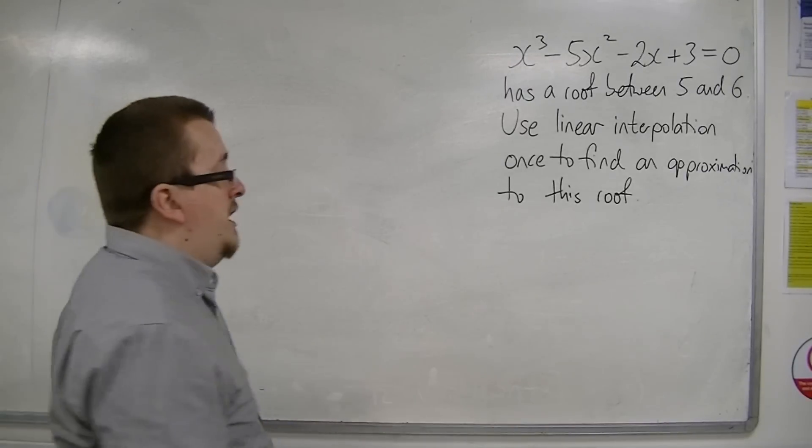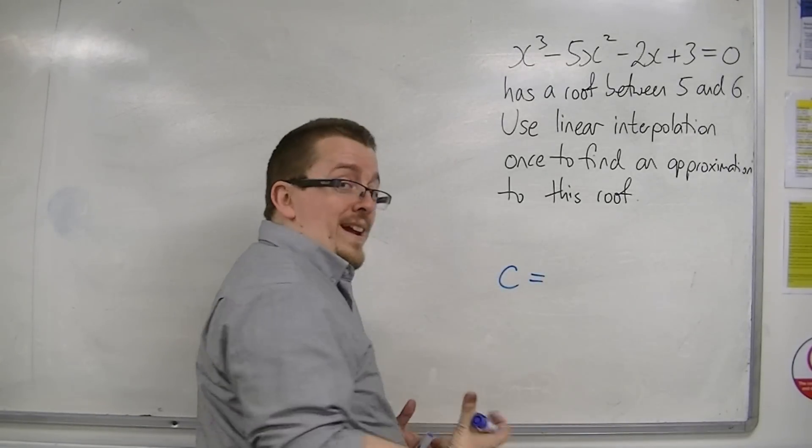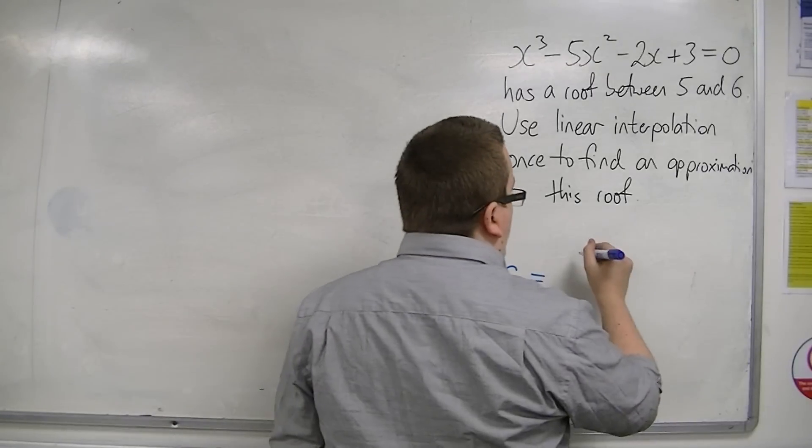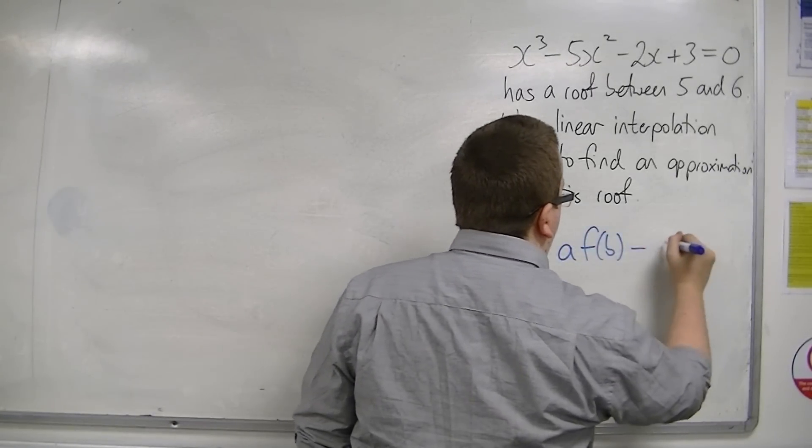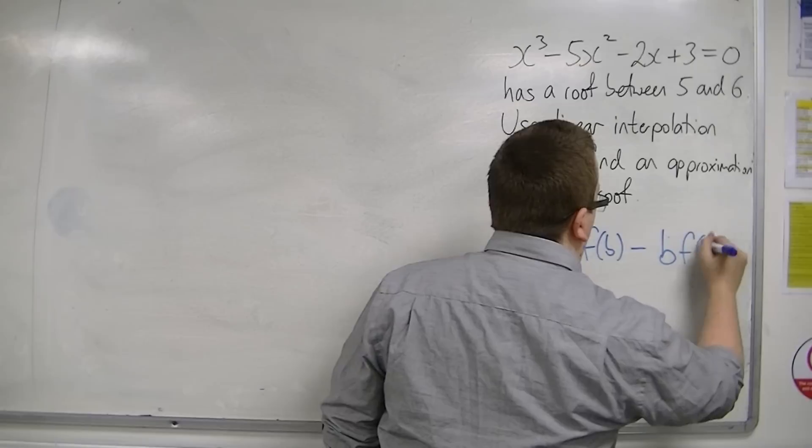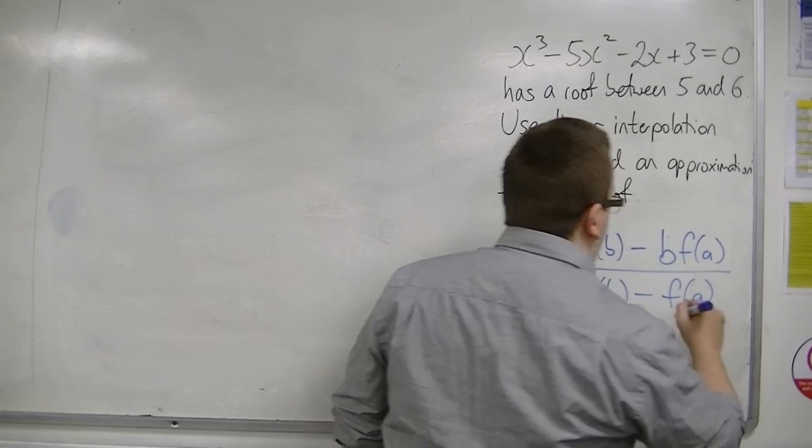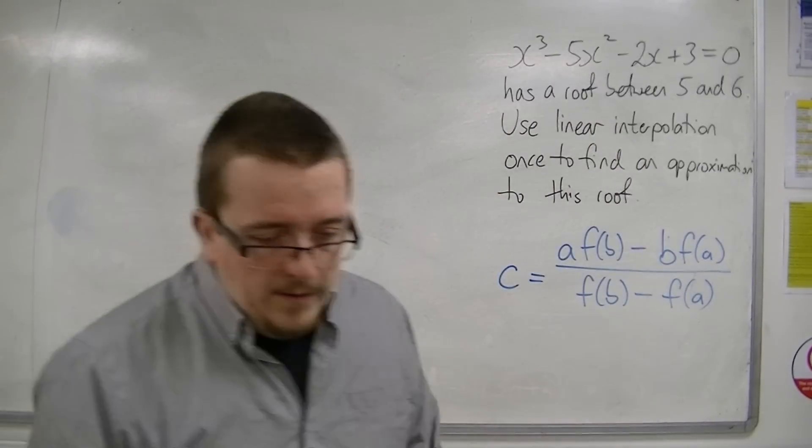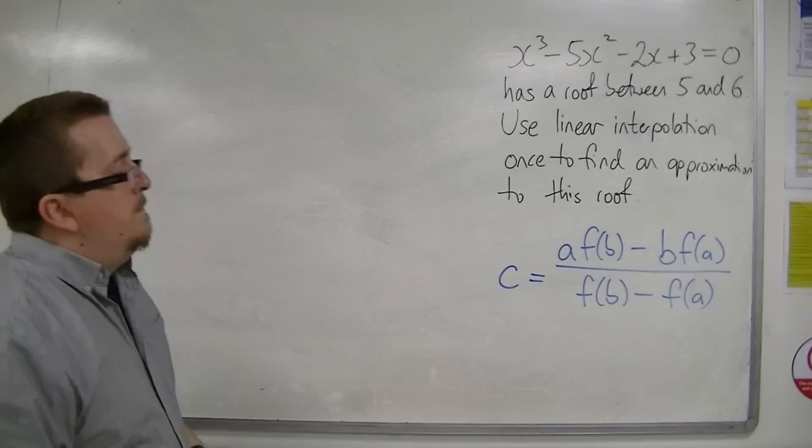So, linear interpolation, the formula was c or x is equal to a f of b minus b f of a all over f of b minus f of a. Just want to double check if I've written that down correctly, that's fine.